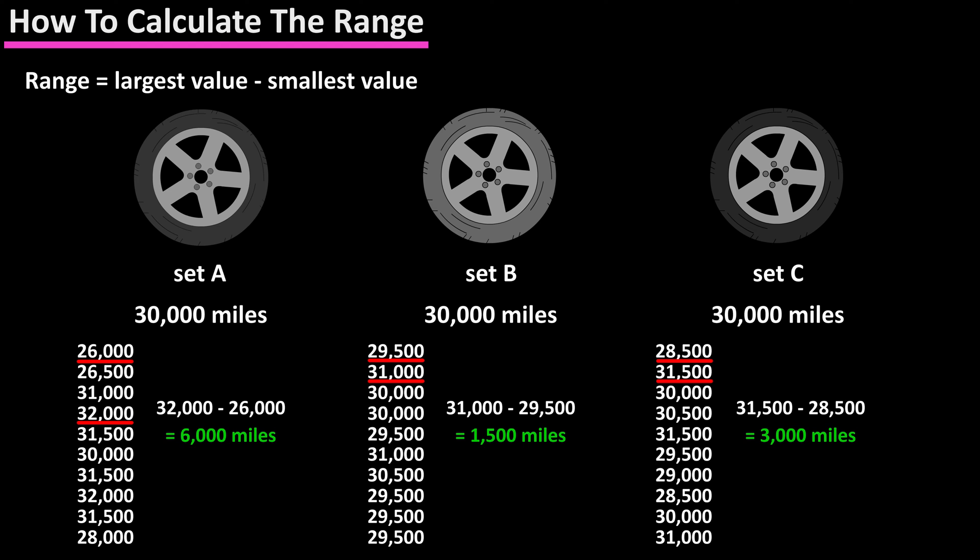So based on the range, set B would be the one to go with because it had a much smaller range, meaning its sets of tires as a group are closer to the average life span of 30,000 miles.